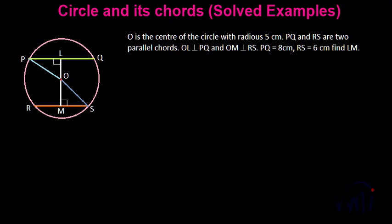Problem statement says O is the center of the circle with radius 5 centimeter. If radius is equal to 5 centimeters that means OP is equal to OS equal to 5 centimeter and PQ and RS are two parallel chords. That means they are two parallel lines. OL is perpendicular to PQ and OM is perpendicular to RS. PQ is 8 centimeter and RS is 6 centimeter, find LM.